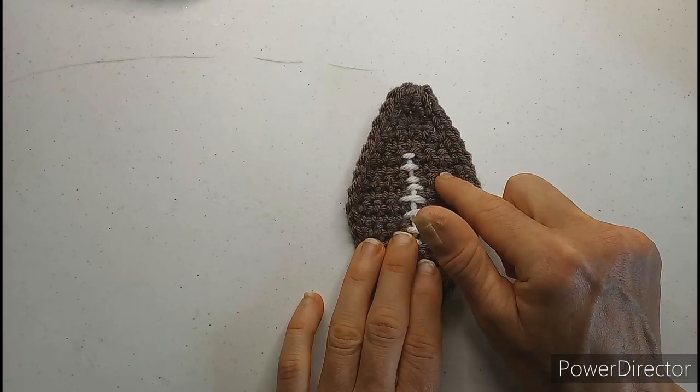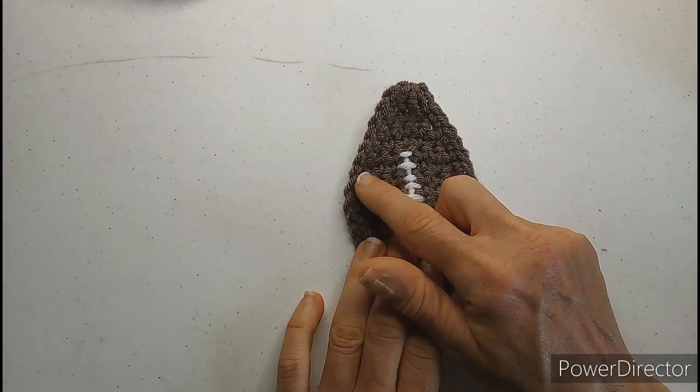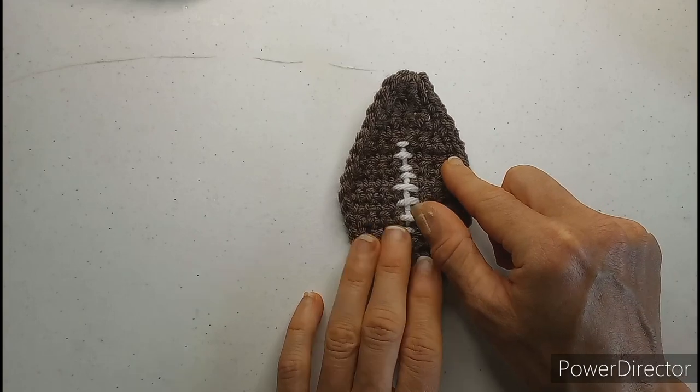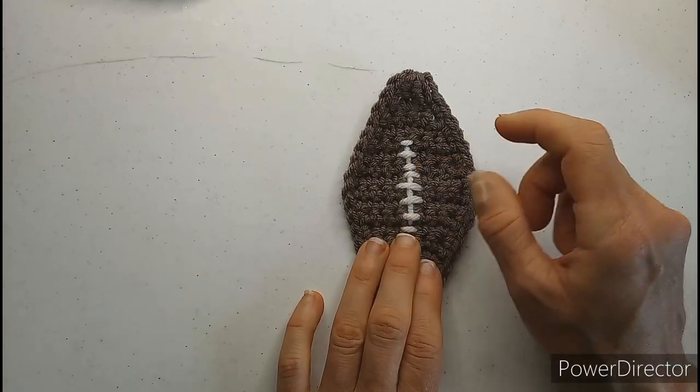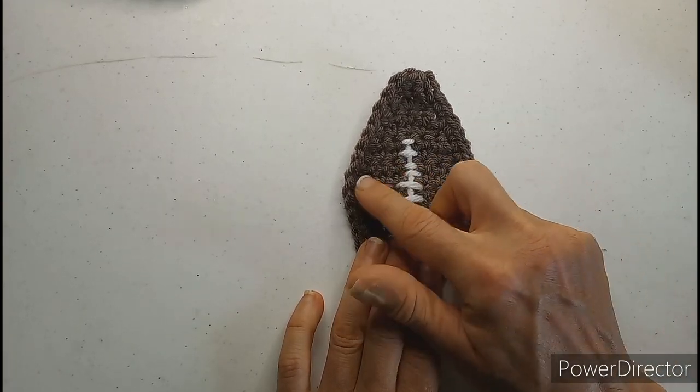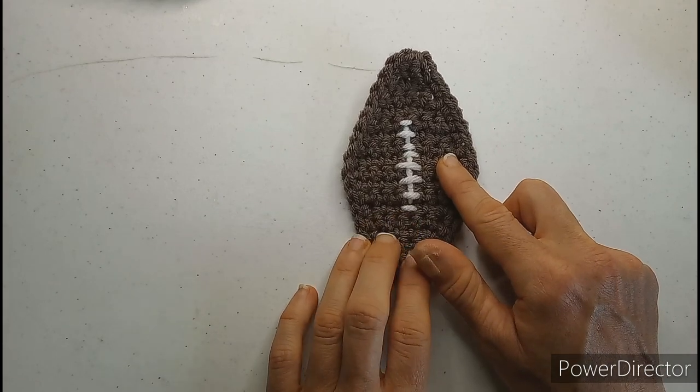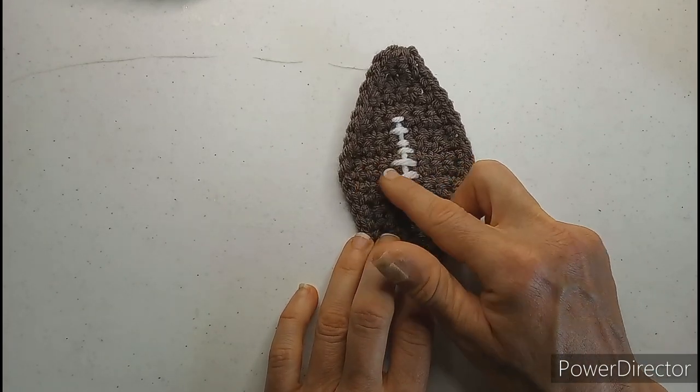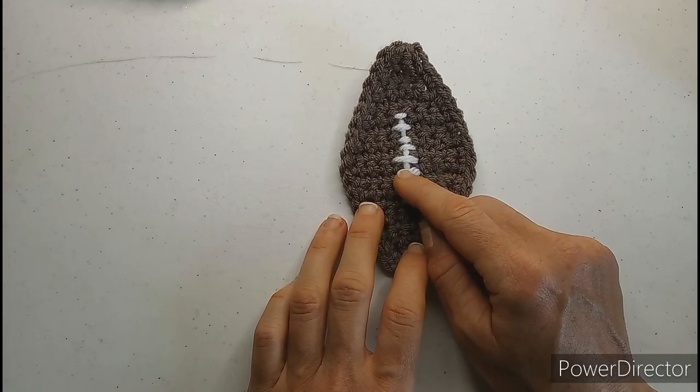I'm going to increase doing two double crochets starting in the row, and then single crochet going across, and then just chaining one at the end of each one until you get to the middle part, and then you're going to start to decrease by single crocheting two together.